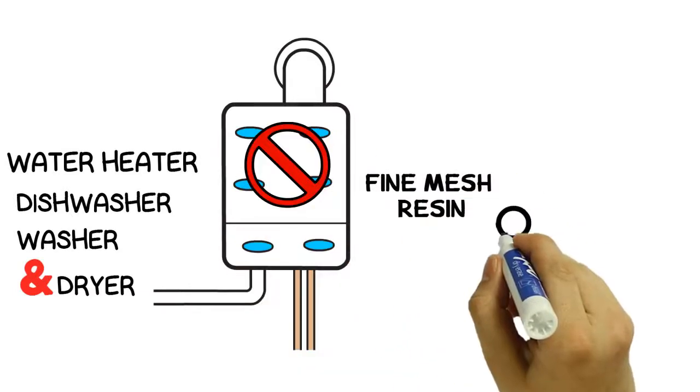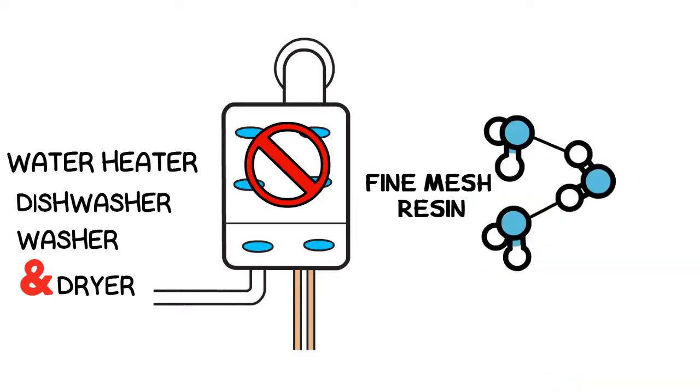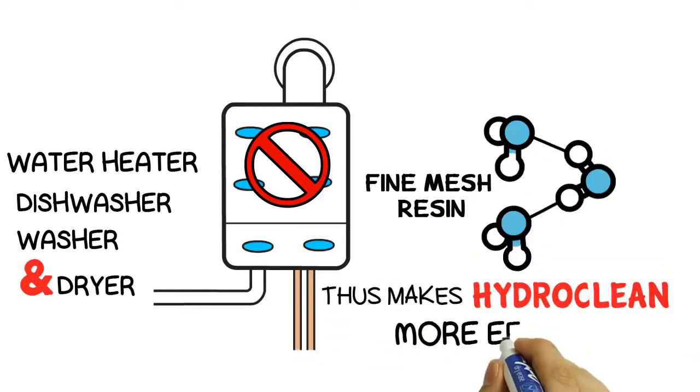Fine mesh resin allows more catalytic action opposed to a common resin used in conventional systems widely available, thus makes HydroClean more efficient.